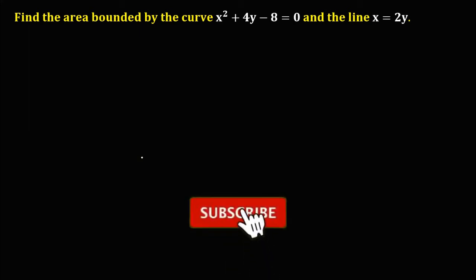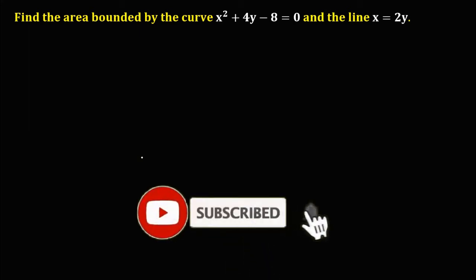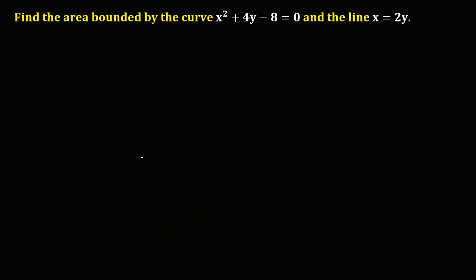Welcome to MathStorya. Let's solve this problem: find the area bounded by the curve x squared plus 4y minus 8 equals 0, and the line x equals 2y.